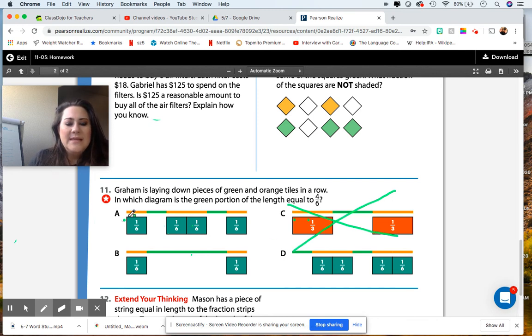Now, he's laying down green tiles or laying down pieces of green and orange tiles in a row. In which diagram is the green portion of the length equal to 6? Well, A, B, and D are saying that they are all divided into sixths. So now what we have to figure out is which is the green portion. So if you notice, these lines are orange and green. So you're going to have to count. And while I see 4 here and 4 here, are they matched up with the green or with the orange? So those are things to consider.